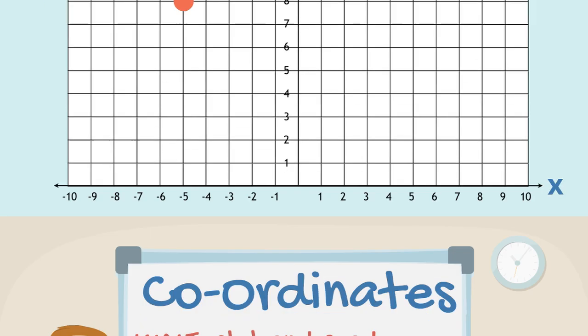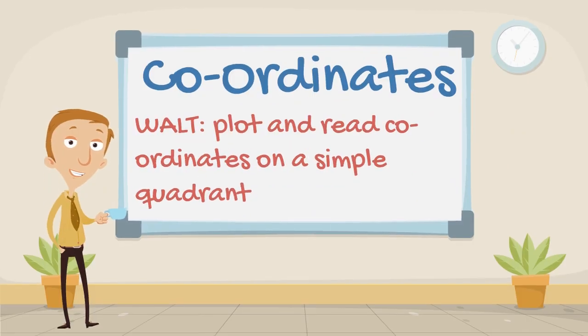So our WALT for today was to plot and read coordinates on a simple quadrant. Plot just means put on, draw. Reading coordinates? Well we can do that now and we now know that a simple quadrant is just one quarter of a full grid.